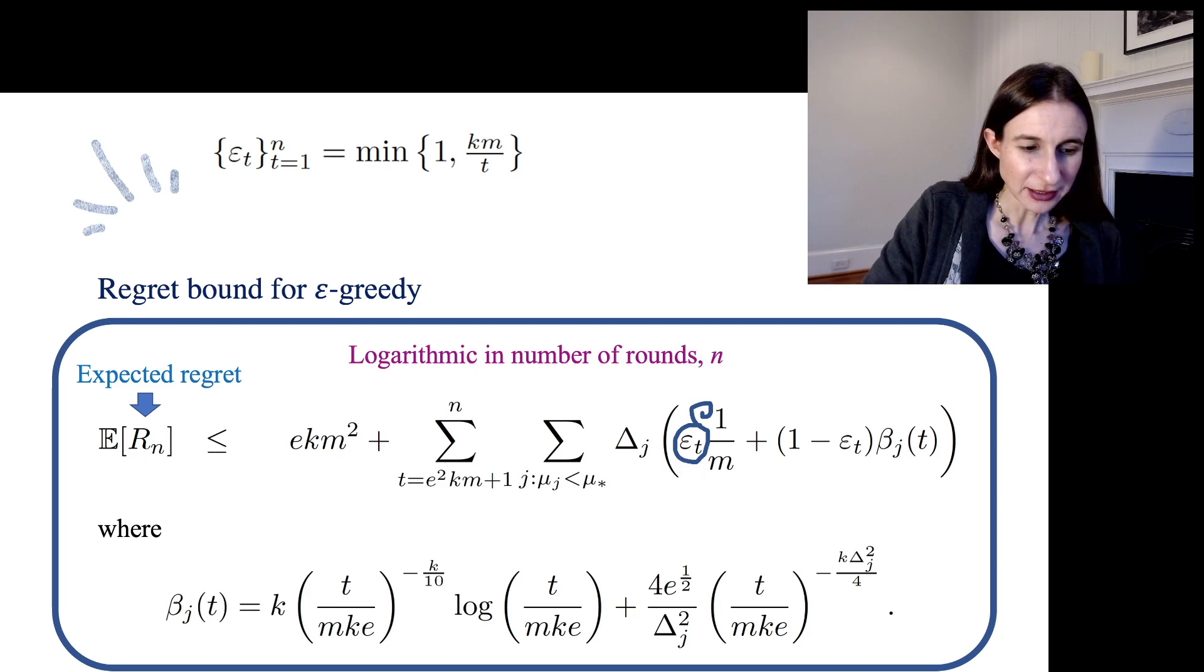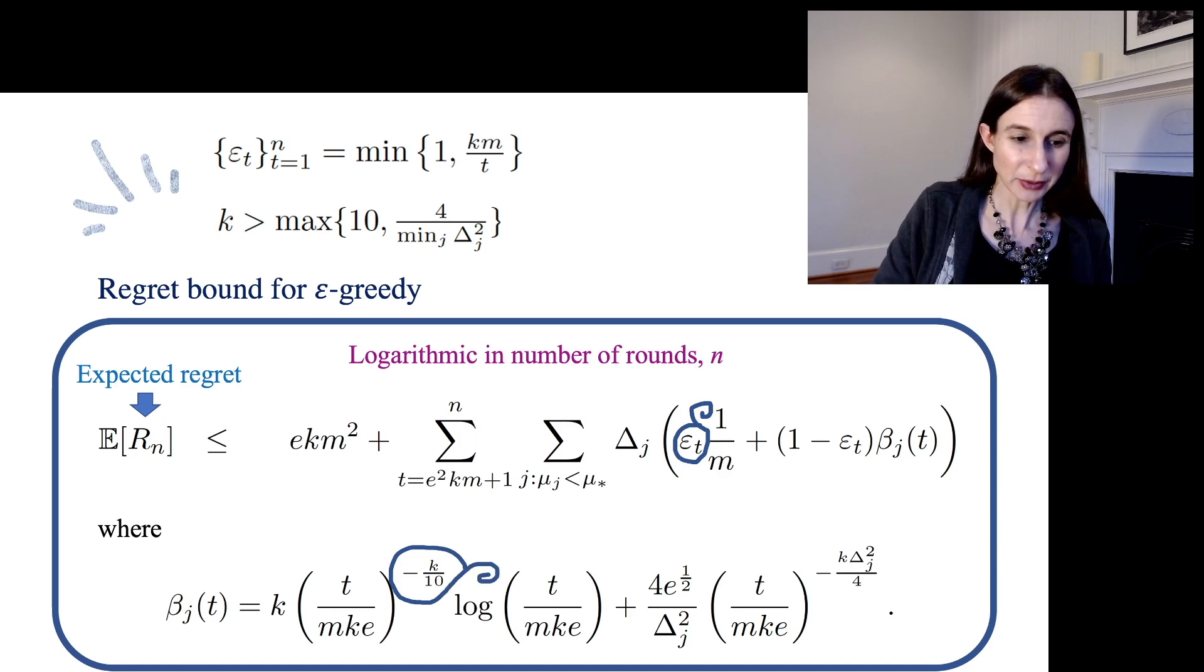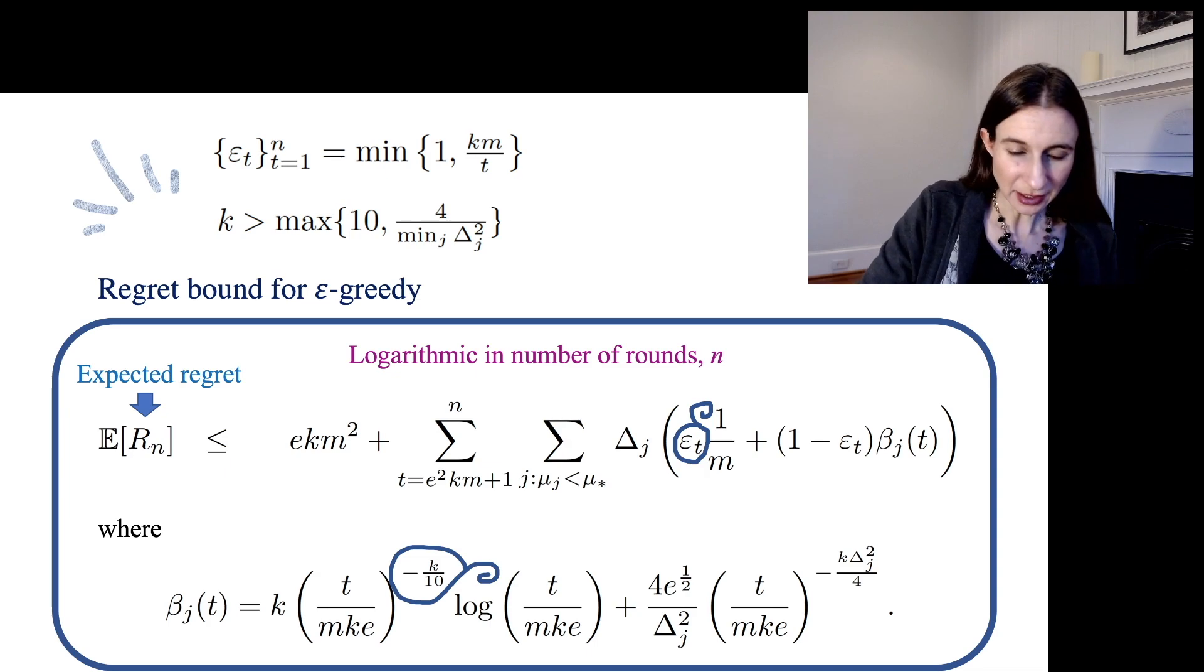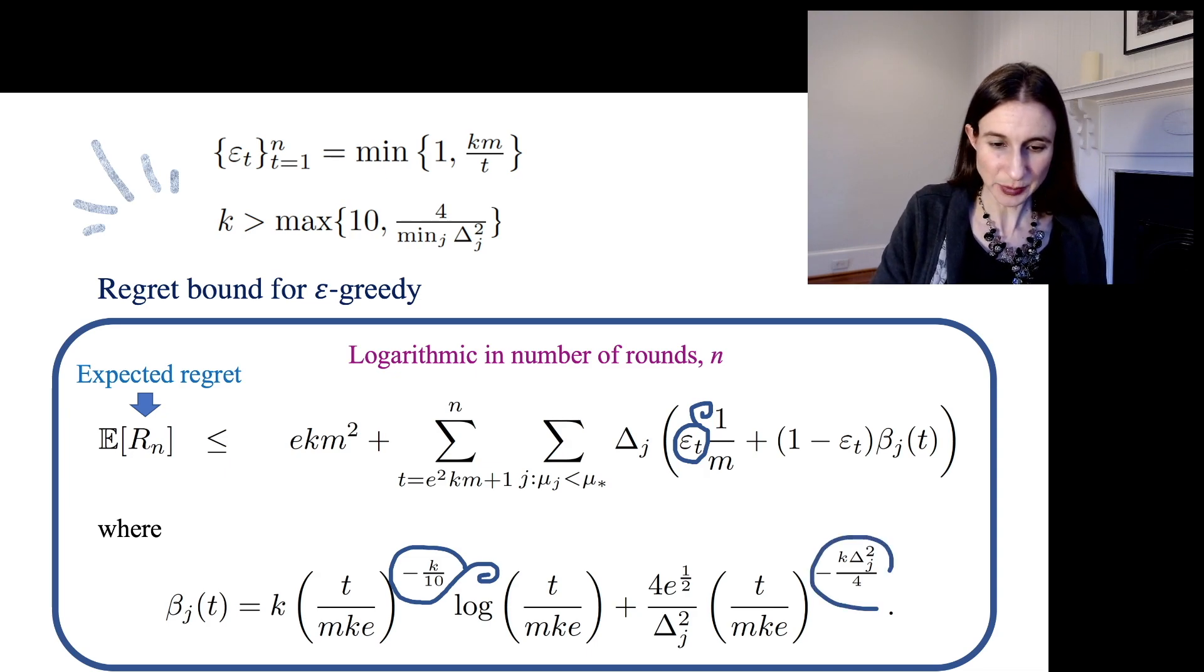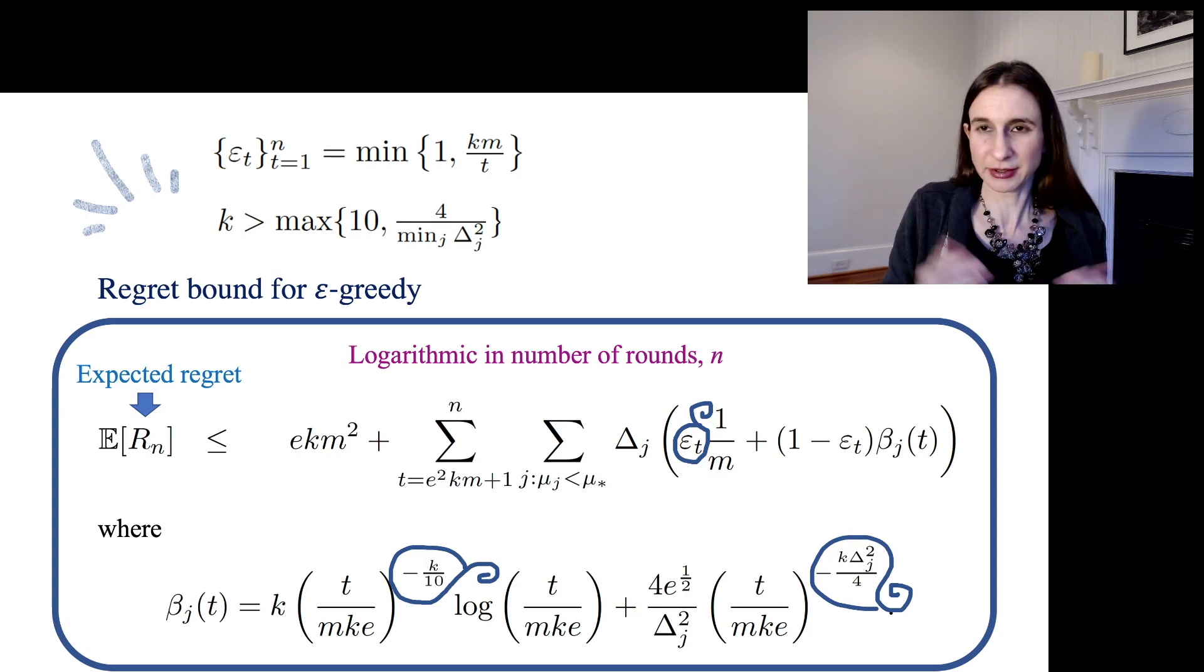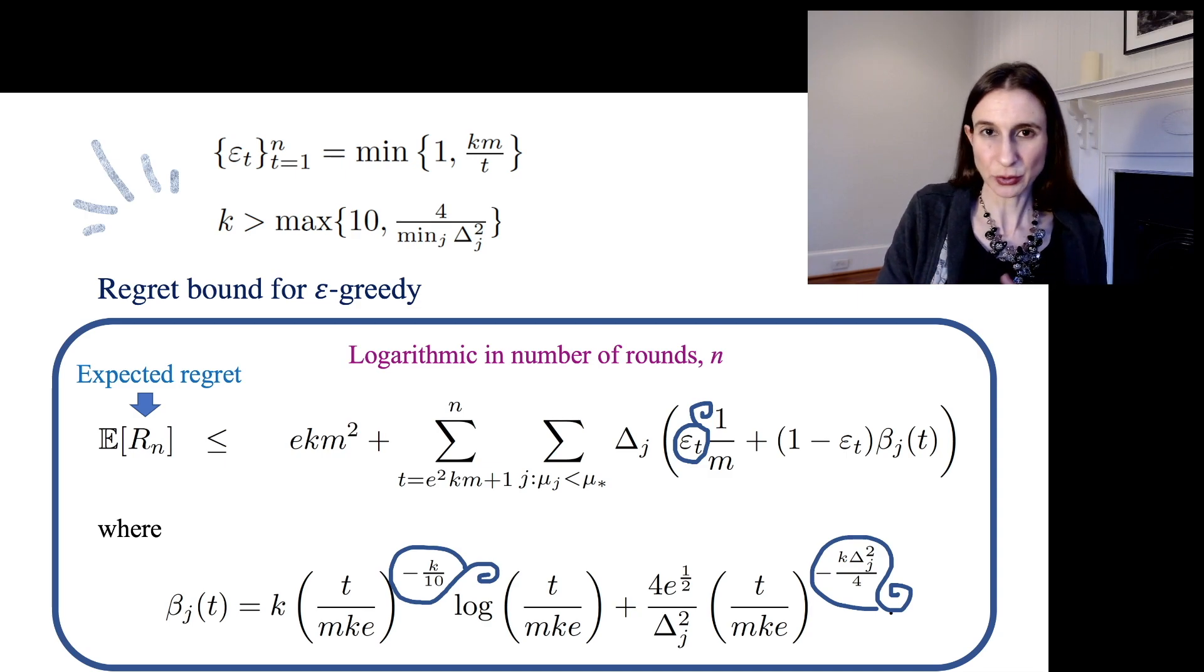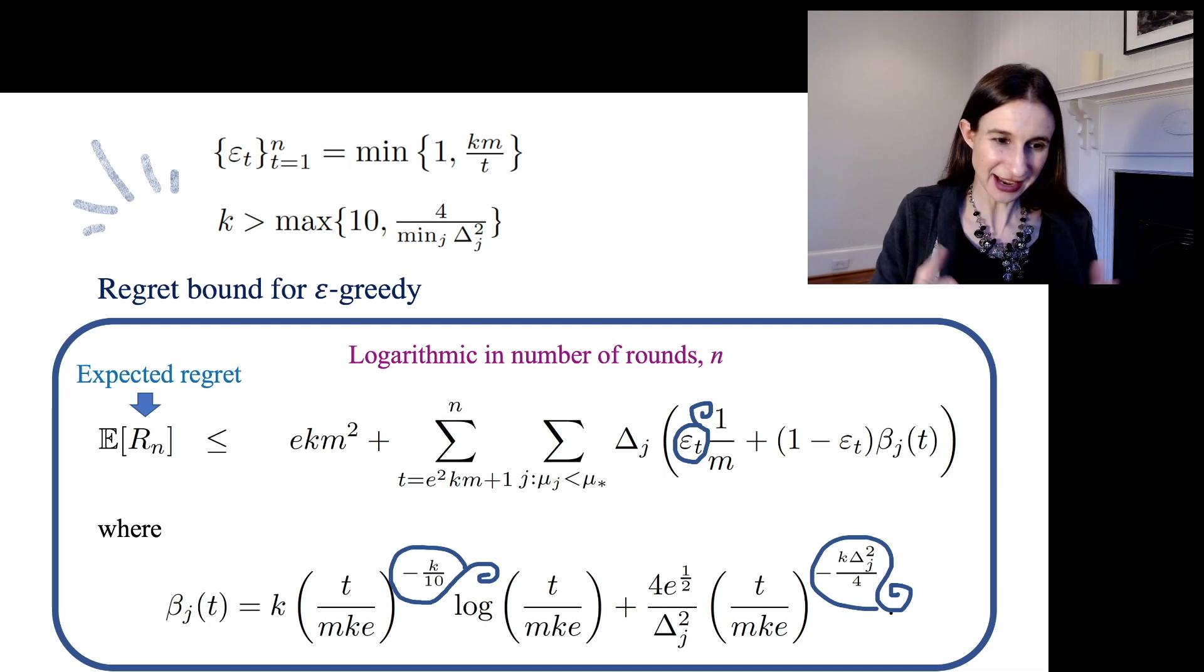There's two subterms and the first one depends on k over here in that power. We chose k to be bigger than 10, so that term is good. And now the other term, if we look at the exponent there, we already chose k to be bigger than 4 over any of the deltas. And so this term also is order 1 over t. So that term is actually fine as well. And so that's how this bound is logarithmic in the number of rounds.